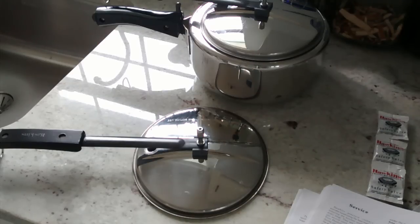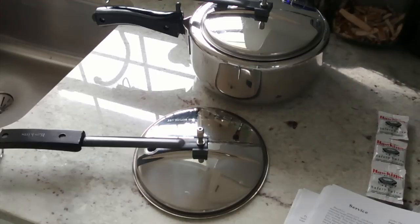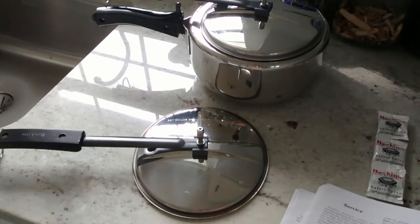How to replace a safety valve on a Hawkins pressure cooker. This is a 3 liter model, but the principle is the same for the different size pressure cookers.